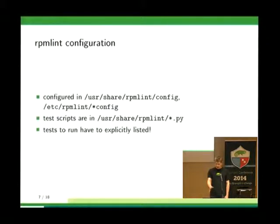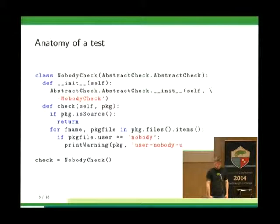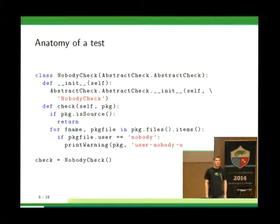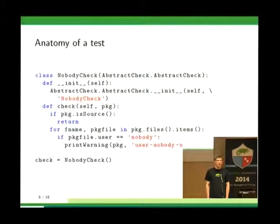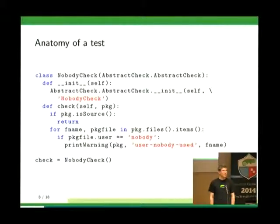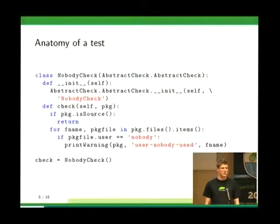RPM-Lint Mini ignores those files and needs special ones. Let's take a look at an actual RPM-Lint test if you want to write one — it's rather simple, just a very short Python file. In this example I chose an already existing test: we check if a package contains files or directories owned by the user nobody, which is something we usually don't want.